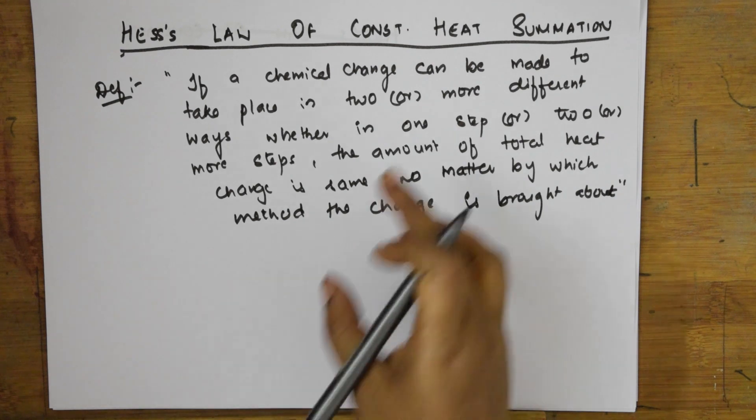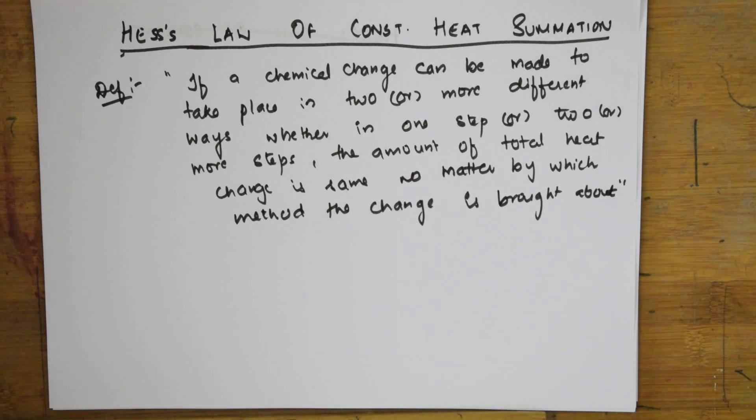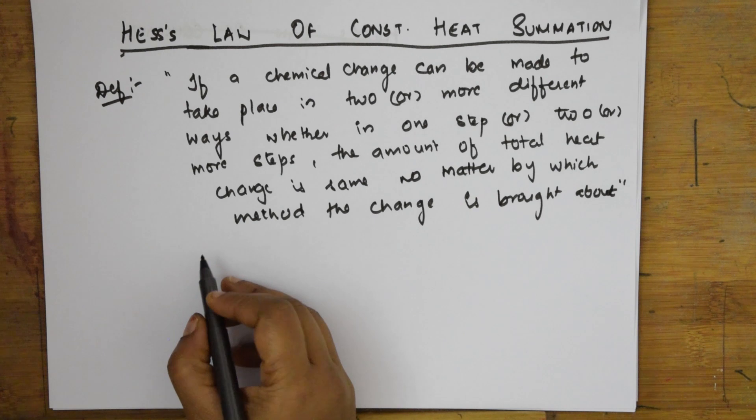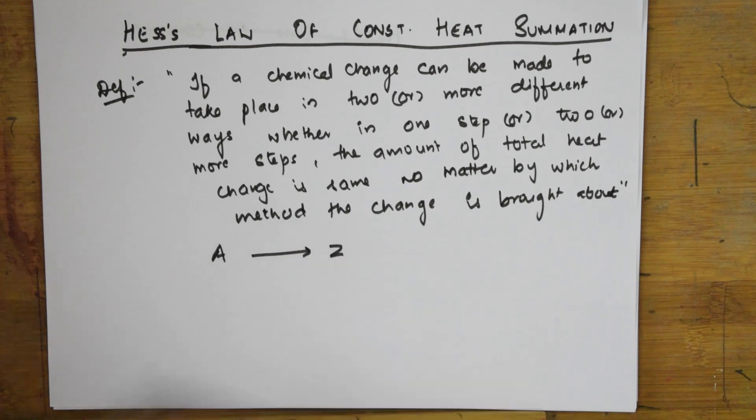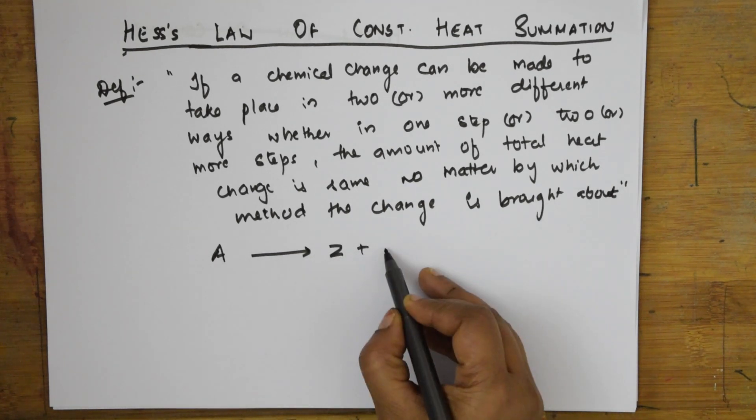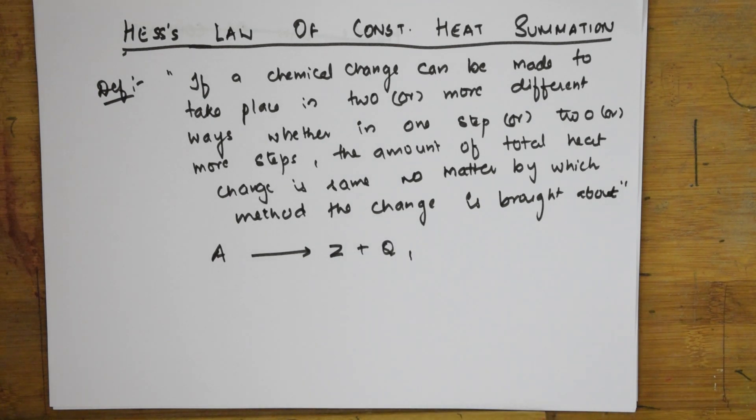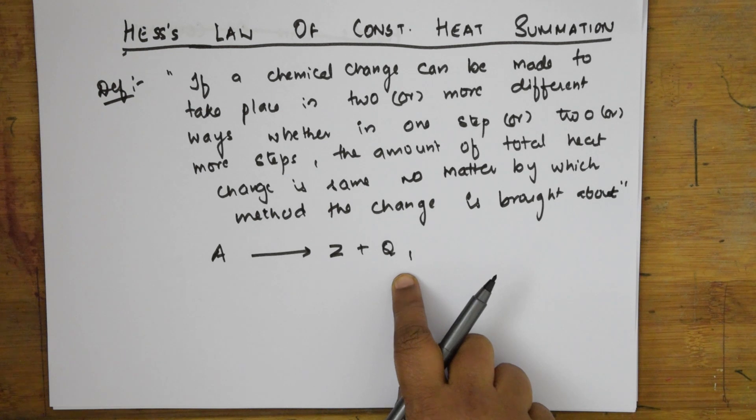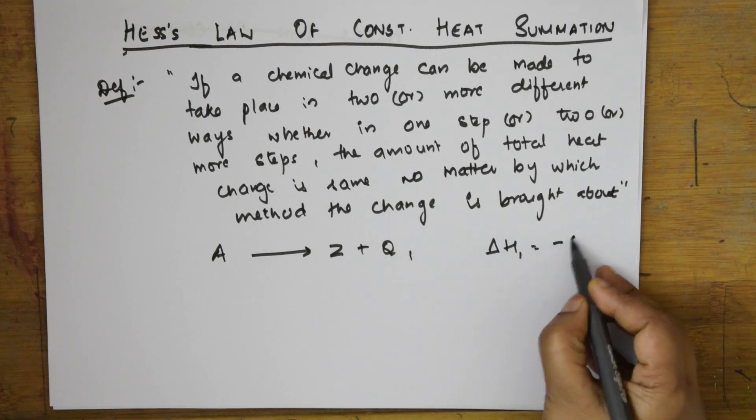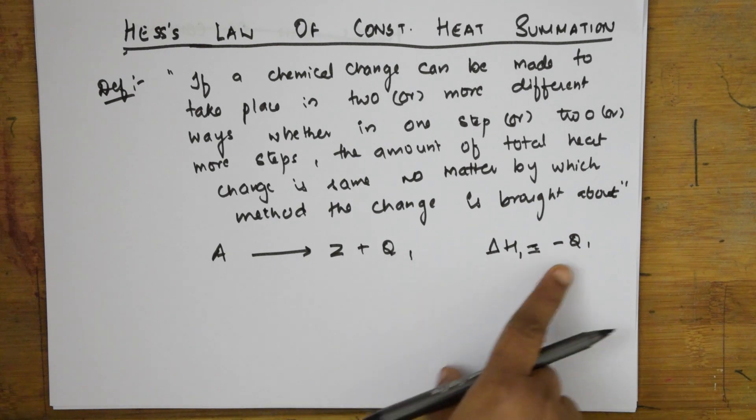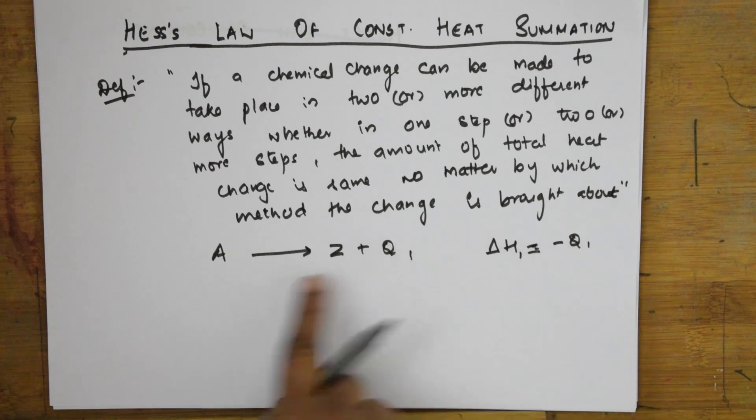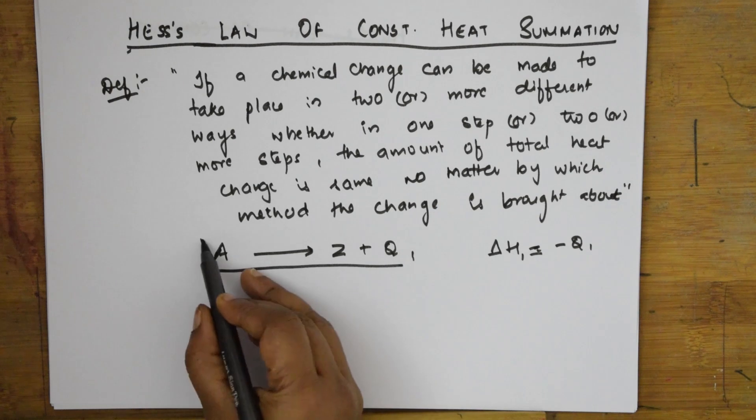Let me take an example to explain this definition. This is basically the first law of thermodynamics. I have a substance A that changes directly to Z, and the heat evolved is Q1. In this case, delta H1 equals minus Q1, where Q1 is the heat evolved when it is a direct change.